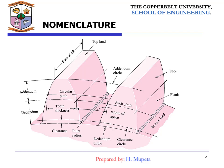Here is the nomenclature for gears. We have the addendum, the dedendum, the face width, the top land, the addendum circle, the pitch circle, the width of space between the teeth, the flank, the clearance circle, the dedendum circle, the fillet radius, and the clearance. We are going to look at each of these to understand and appreciate the nomenclature of gears.